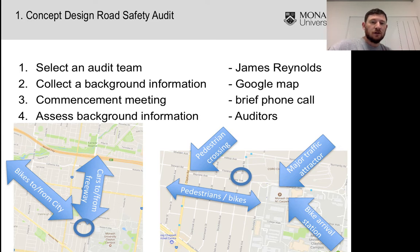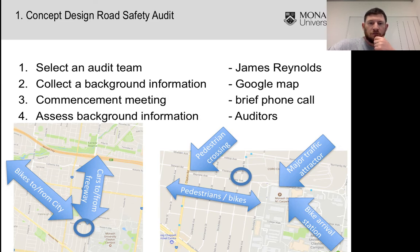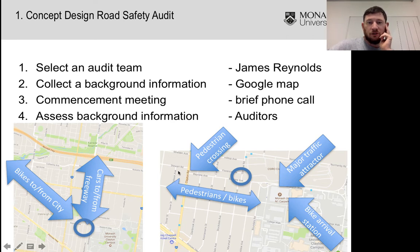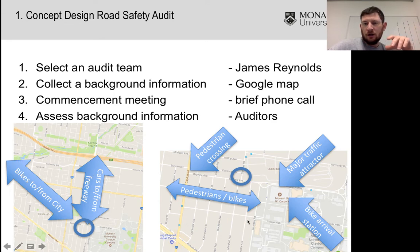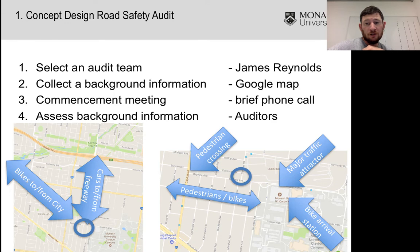I'm identifying that there's a lot of traffic going north and south to this intersection from the Monash Freeway trying to get into the campus. There's also a significant east-west movement for pedestrians and cyclists — further down on Clayton Road there's a signalized pedestrian crossing and a bike path that leads through to the Gardiner Creek Trail and into the city. On campus there's the major car park and a bike arrival station just near the car park as well.